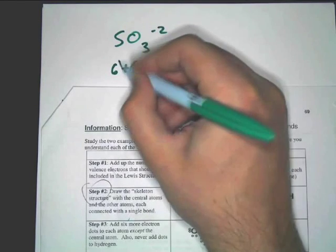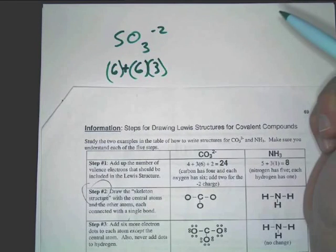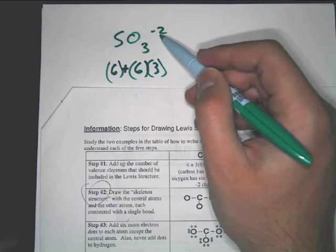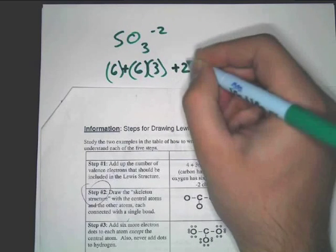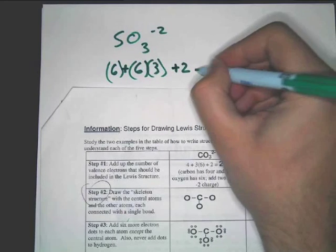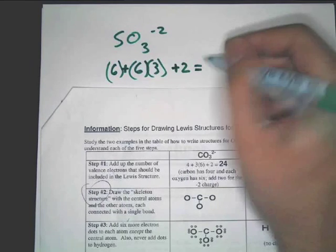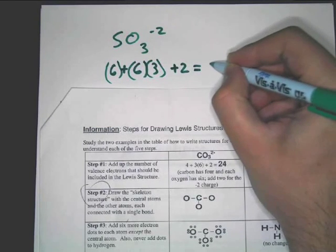Now, the last thing you've got to do to find valence is the negative 2 here. What does that mean for electrons? Add 2. You've got to add 2. Now, we've got, what's this add up to, 26? Yeah. All right.